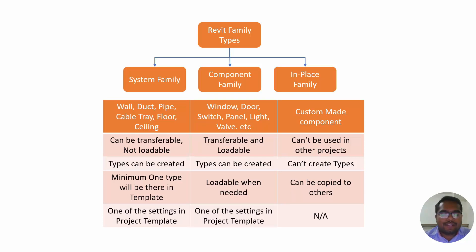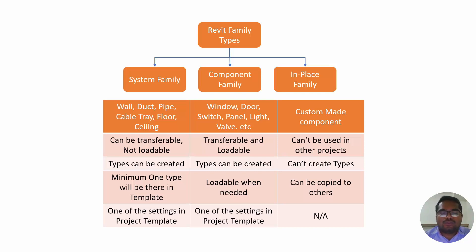In system families, at least one type will be there by default — like wall, door, and others. Based on that type you will be able to create variations. These types are loaded from the project automatically, so you don't have to create them from the beginning. Component families are loaded wherever required.